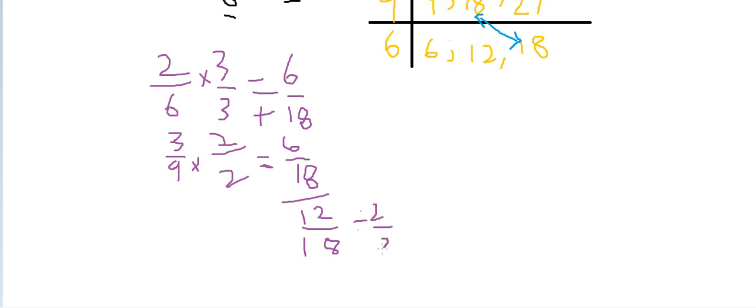So dividing by 6: 12 divided by 6 is 2, and 18 divided by 6 is 3. We get 2 by 3.